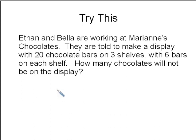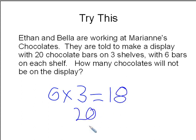6 times 3 equals 18. 20 minus 18 equals 2. So 2 is the answer.